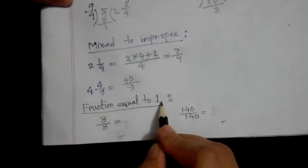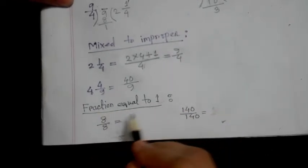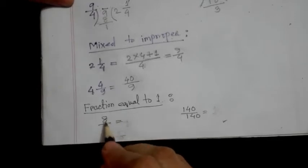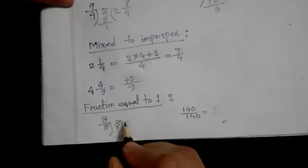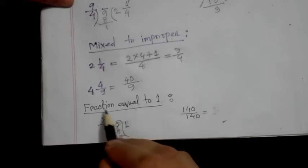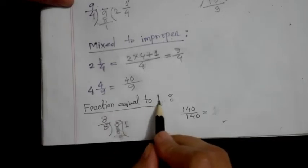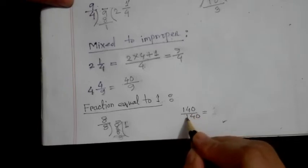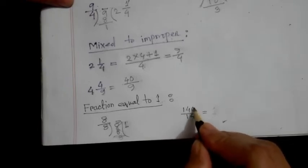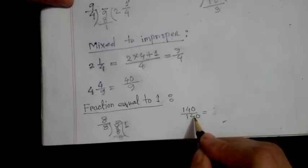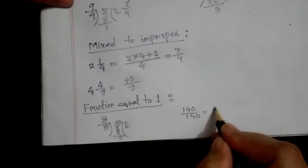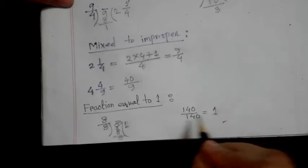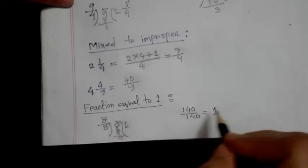Now look at another concept: fraction equal to 1. I write here 8 by 8. If you divide 8 by 8, then you get only 1. So it is called fraction equal to 1. Another example: 140 by 140. If you divide 140 by 140, then you get only 1. So this fraction is equal to 1.